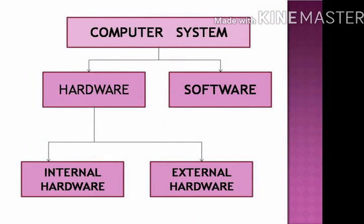The next slide contains a block diagram of the computer system. The computer system is divided into two parts: hardware and software. Hardware is further divided into two parts: internal hardware and external hardware.